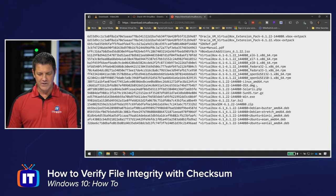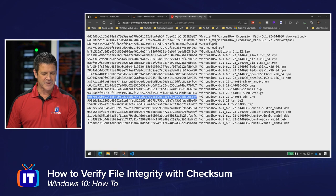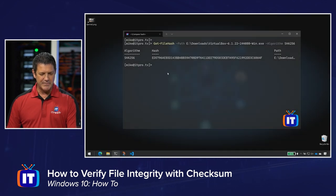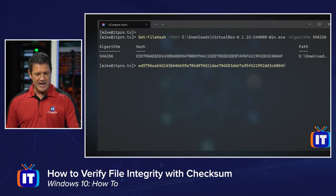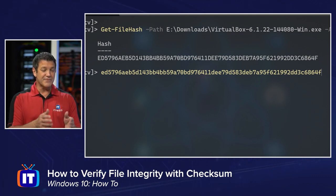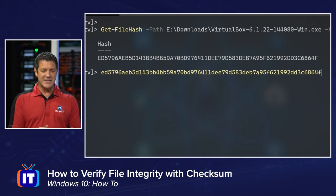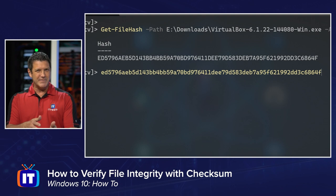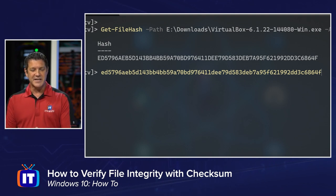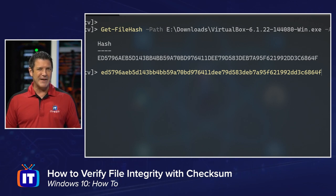Back over to their file — this is the one I downloaded, VirtualBox for Windows. I grab this hash value — checksum, you can use those terms interchangeably — and paste it right there. Now I need to compare those two and make sure they're the same. The first one starts with ED5796, and the one I just pasted also starts with ED5796. I typically look at the first few characters and the last few characters, and if those are the same, I feel pretty safe.